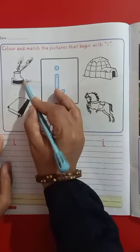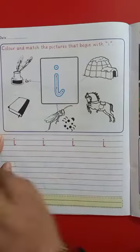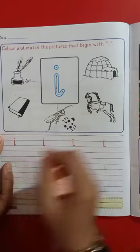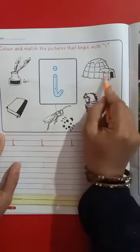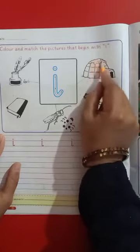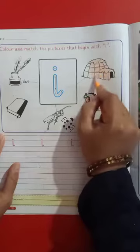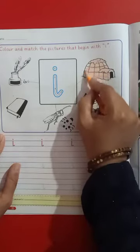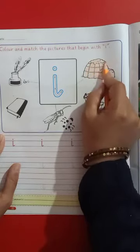Ink pot. Ink pot hame na isko match kar diya. Ab hum isme color karenge. Igloo, igloo aap ko pata hai white hota hai lekin yeha pe hamaara work kiya ye ke hame na jho pictures I se start hotei hai udhme hame na coloring karna hai. To igloo me hame color karenge.